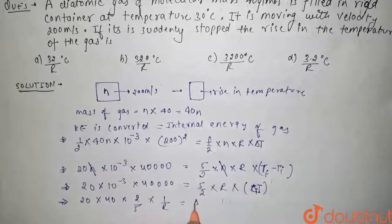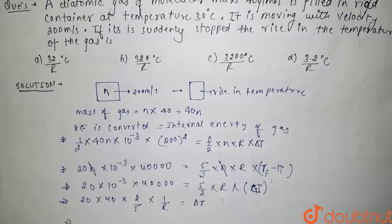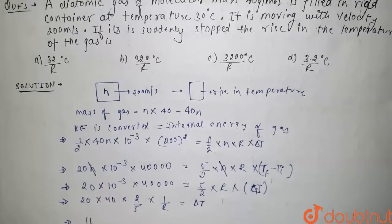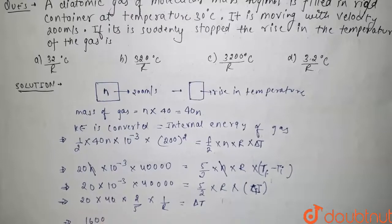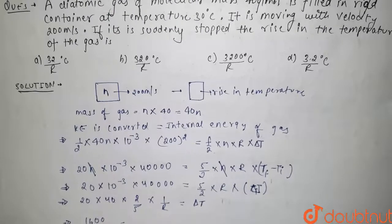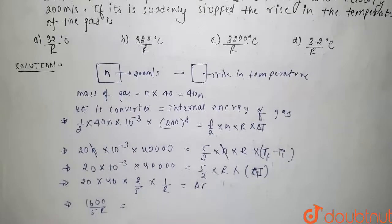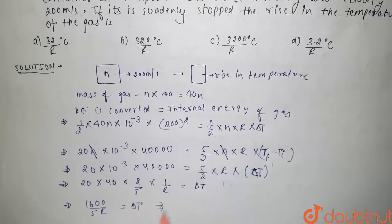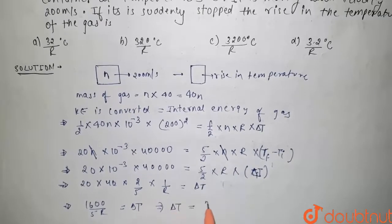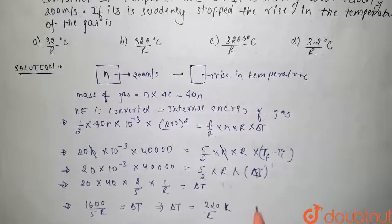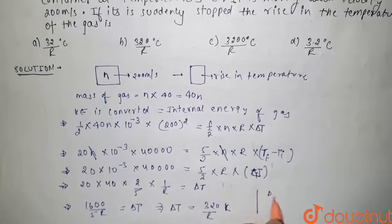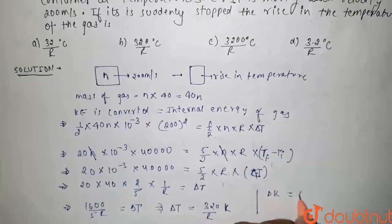So from here, delta T comes out to be 320 by R kelvin. Now we know that change in kelvin temperature is equal to change in degree Celsius temperature.